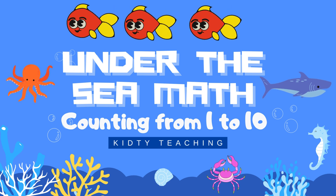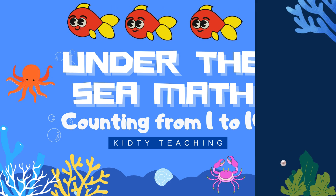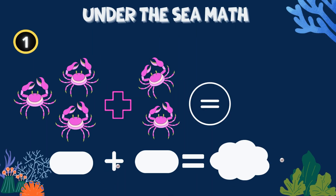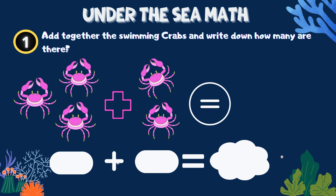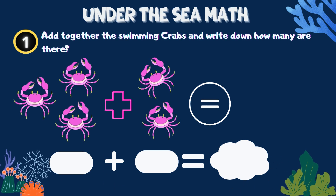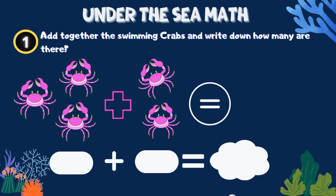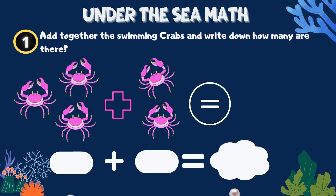Under the sea map, counting from 1 to 10. Add together the swimming crabs and write down how many there are.